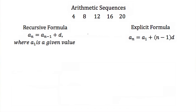The formula for an arithmetic sequence can be written in one of two ways. It can be written as a recursive formula or an explicit formula. A recursive formula always includes previous terms in the formula. The recursive formula for an arithmetic sequence always looks like a_n is equal to a_(n-1) plus d, and we're usually given a value for the first term in the sequence, a_1.